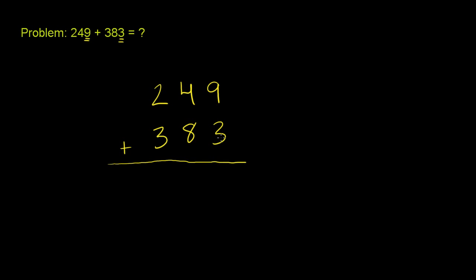So we start at the ones place, and we say, what is 9 plus 3? Well that's equal to 12. I'm writing the 1 in 12 in orange on purpose, because when you want to write the sum down here, you can't write a two-digit number. You can only write a digit between 0 and 9.